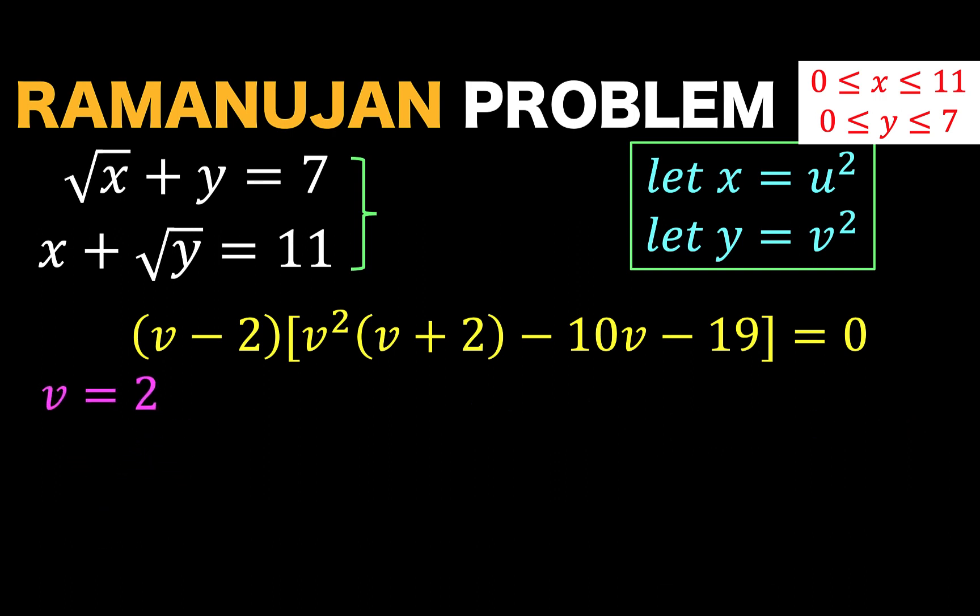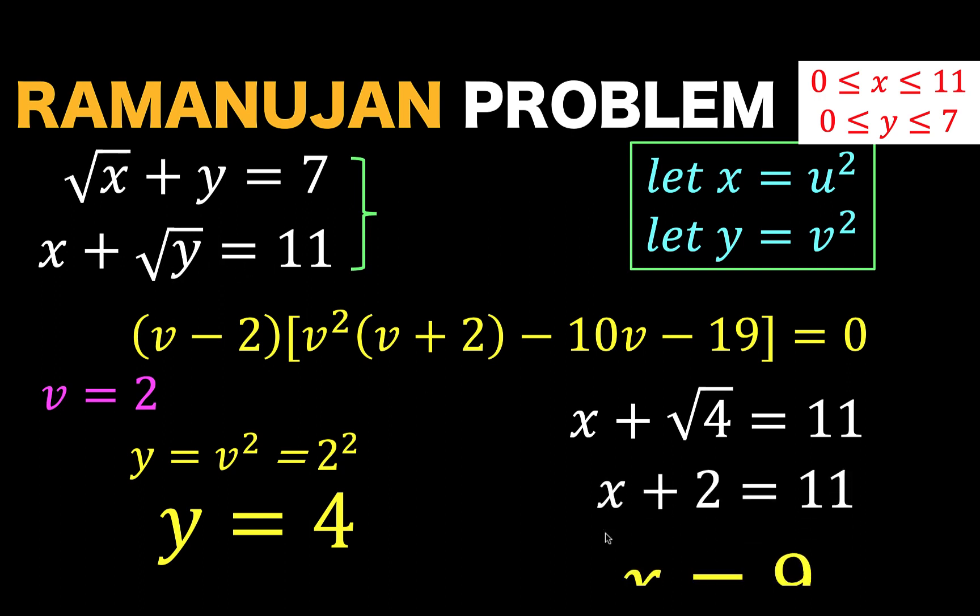And with v equals 2, we can now find the values of x and y. We know that y is equal to v squared. And we know that v is equal to 2. So, that means y is equal to 2 squared, which is equal to 4. And with y now equal to 4, substituting this y equals 4 in any of these original equations, we now have x plus the square root of 4 equals 11, using this second equation. And that gives us x equals 9. So, the values of x and y are 9 and 4, respectively.